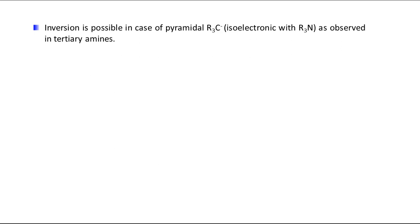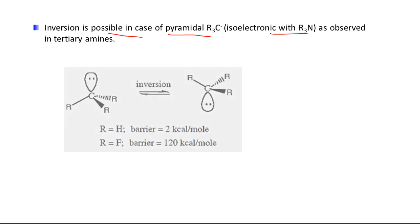In this pyramidal configuration, inversion is possible — the same type of inversion we also see in the case of R₃N, that is trialkyl amines. The same type of inversion observed in tertiary amines can be seen here as well.